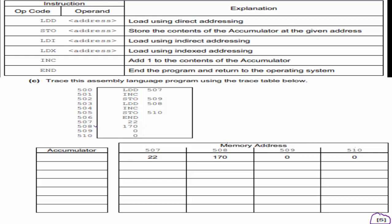When we execute LDD 507, that is direct addressing, which means we go to address 507 and load its contents, which is 22, into the accumulator. I write 22 in my accumulator. And now the hardest part is over — sometimes the hardest part is just getting started.